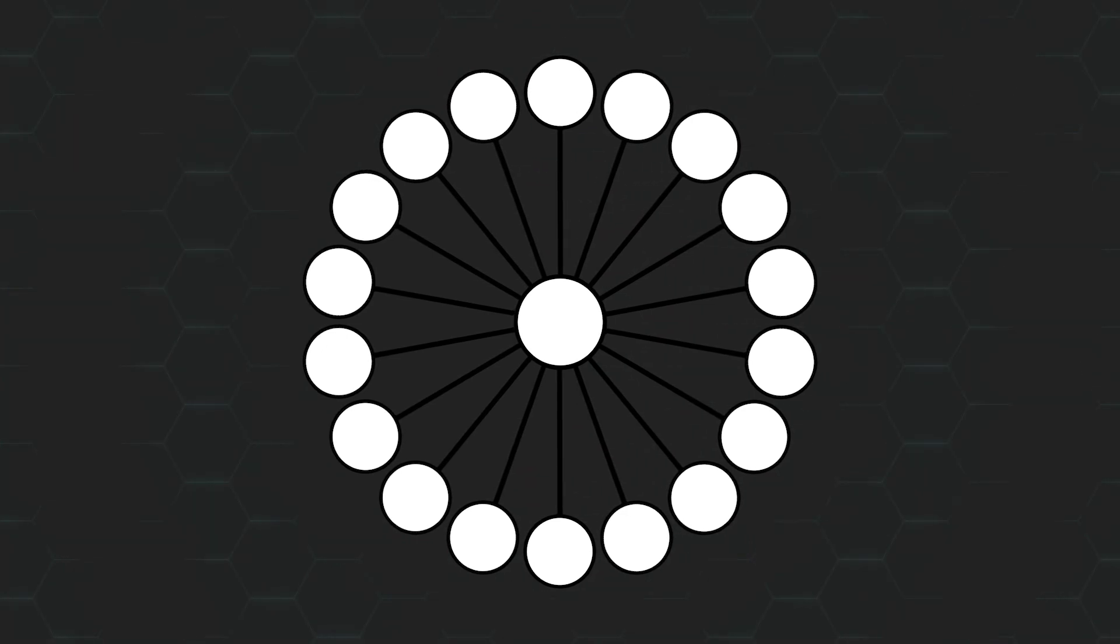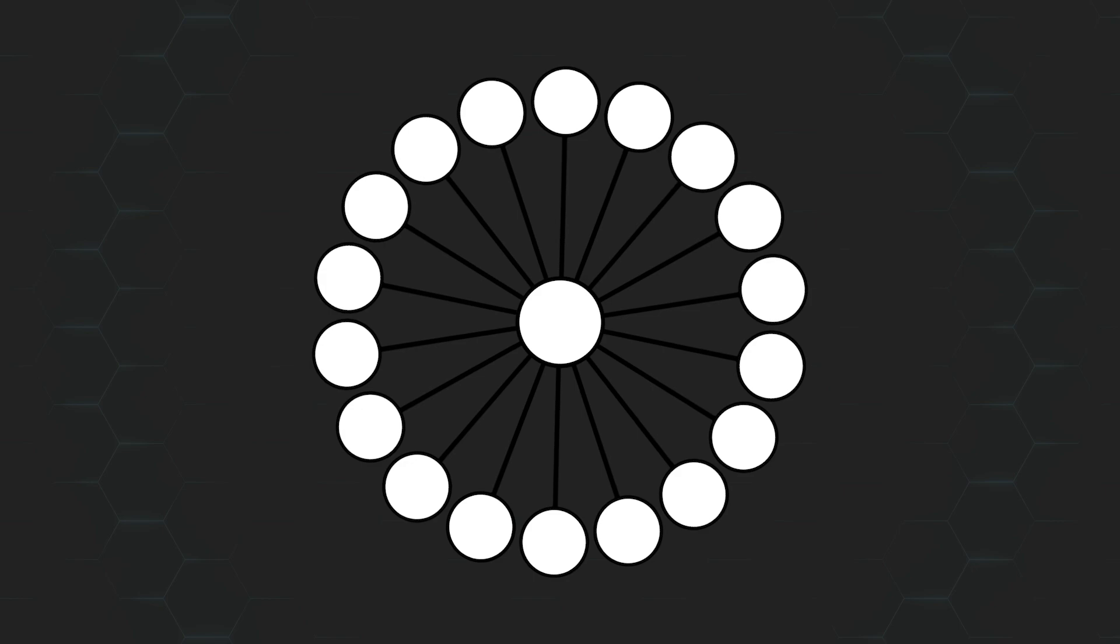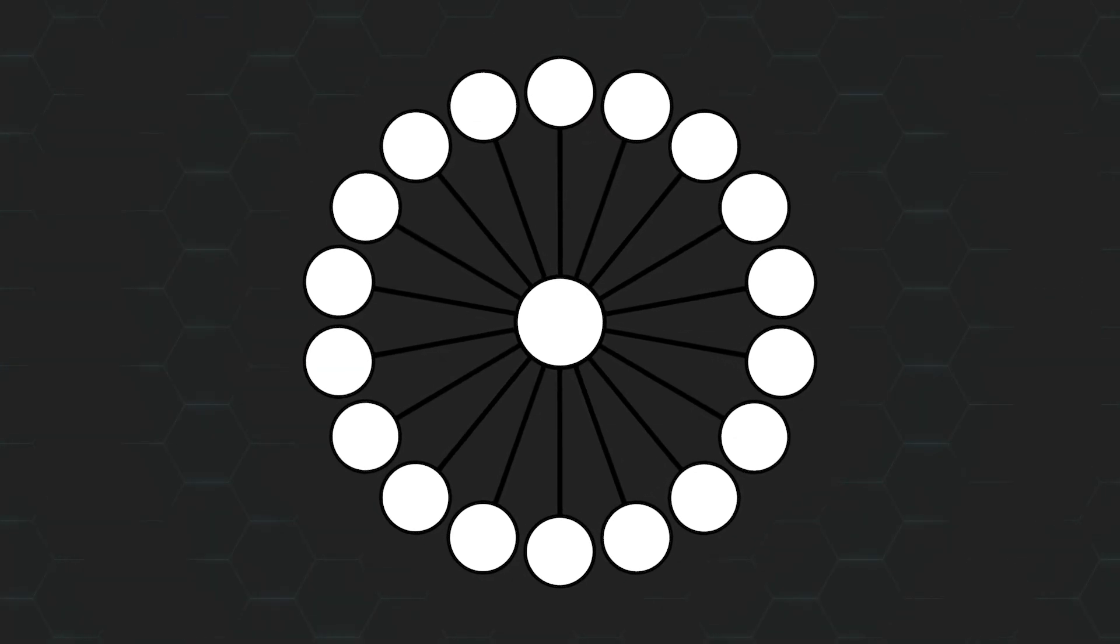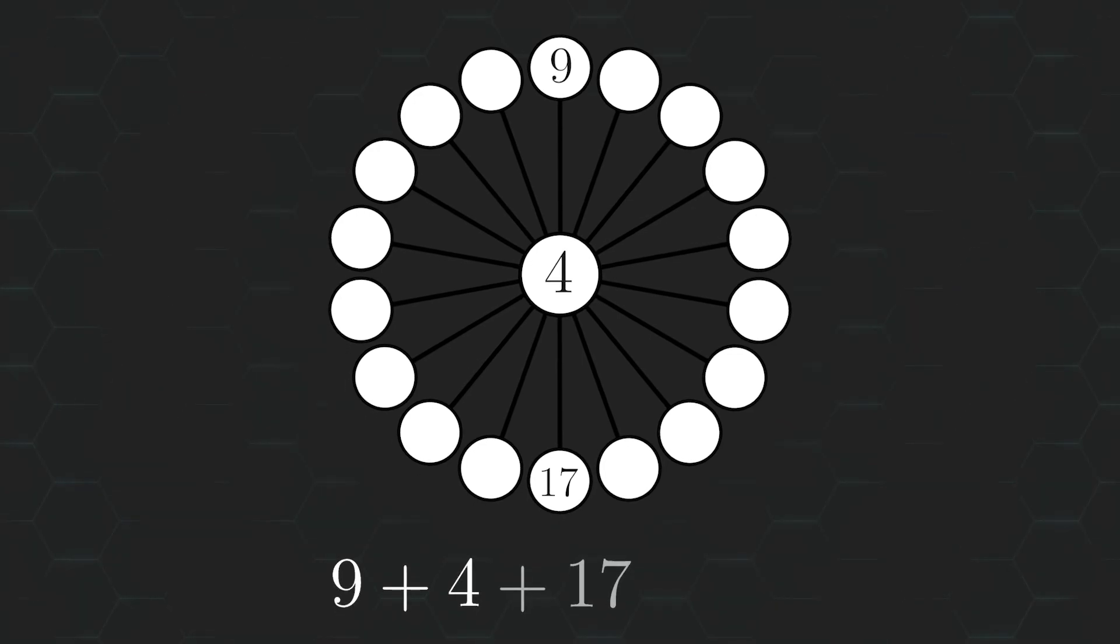Just like with any puzzle, it's always a good idea to just give it a go and see if we can spot any clues along the way. Let's start off by filling up the circles along the vertical line with the numbers 9, 4, and 17. This seems like a reasonable way to start, since 9 plus 4 plus 17 does in fact give us 30.